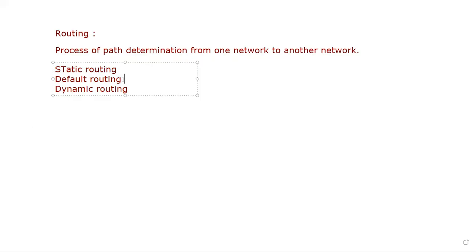Default routing is part of static routing. Actually we have two types of routing: static and dynamic only. Default routing is part of static, but we will discuss it later because it works on edge routers only.